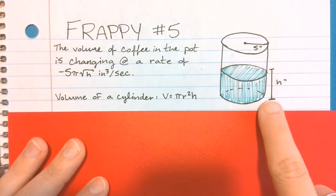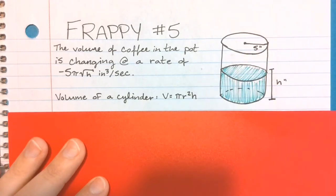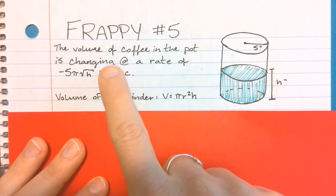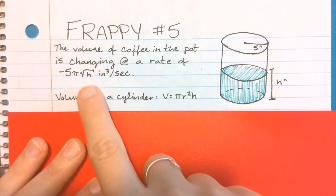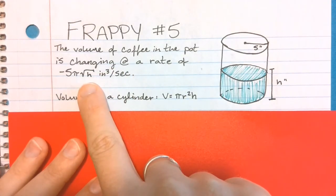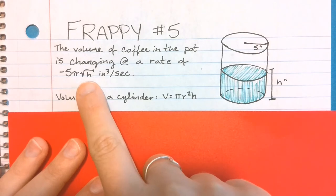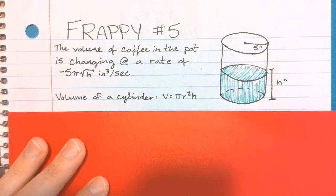They give us the dimensions, really just the radius of this cylinder, and tell us the volume is changing at a rate of negative 5π√h inches cubed per second, which we should be thinking right away represents dv/dt, the rate of change of the volume. They also tell us the volume of a cylinder formula, which could be helpful, so not something we'd have to memorize.